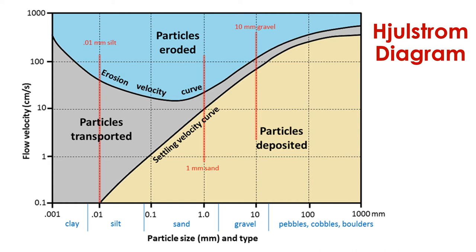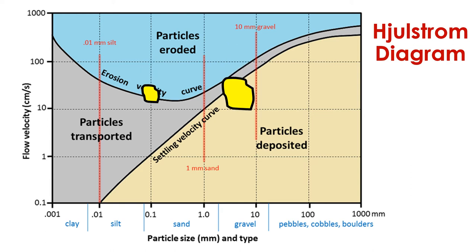Let's do one more example. This time, let's assume we have two grains in motion: one fine sand particle and a piece of gravel. What would happen if we decrease the flow velocity to 10 centimeters per second? Would the grains remain in motion or would they be deposited? Pause the video now and try to figure it out yourself. The answer is that the sand grain would remain in motion, but the gravel clast would be deposited. This makes sense intuitively — it takes more energy to move a piece of gravel than it does a piece of sand.